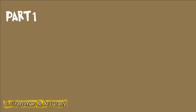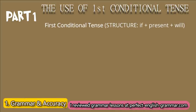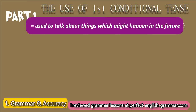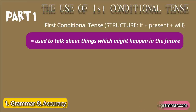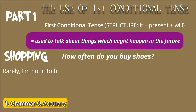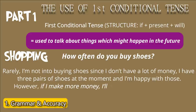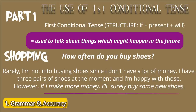In part 1, I simply used the first conditional tense. We use this when we talk about things which might happen in the future. For example, one of the questions I got was, 'How often do you buy shoes?' My answer was: 'Rarely. I'm not into buying shoes since I don't have a lot of money. I have three pairs of shoes at the moment and I'm happy with those. However, if I make more money, I'll surely buy some new shoes.' Notice how I used the first conditional tense in the last sentence. By using that tense, I was able to develop a better answer with good grammar.